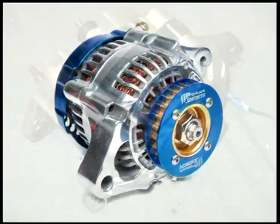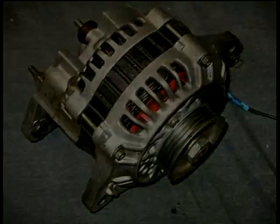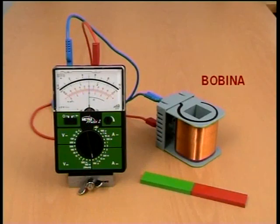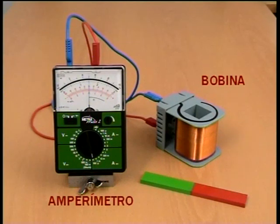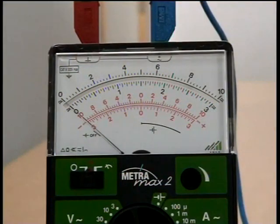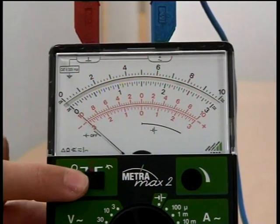Para realizar una experiencia de inducción electromagnética se va a considerar el montaje de la imagen. En este montaje se dispone de una bobina con un gran número de espiras conectada mediante dos cables a un amperímetro. En primer lugar se ajusta el amperímetro de modo que el cero quede en el centro de su escala.